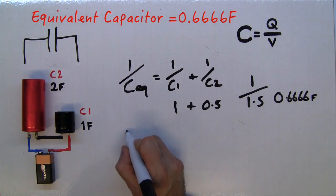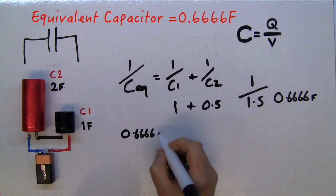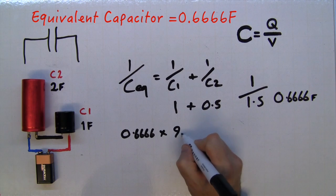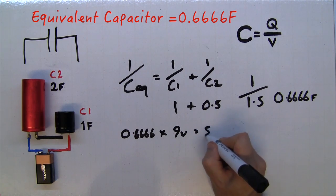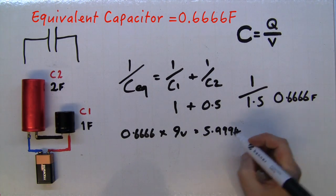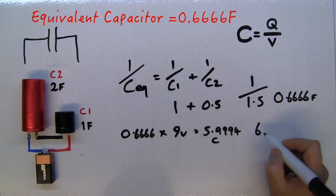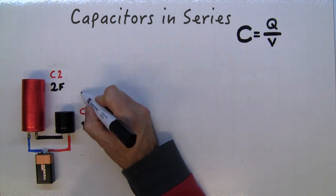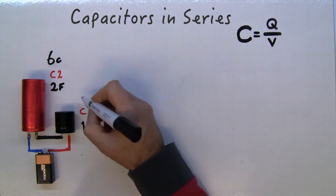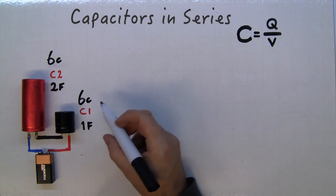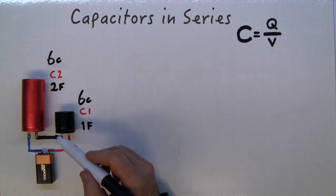Now your 0.6666 farads times nine volts is 5.9994 coulombs. Let's make that into six to make it easier. So six coulombs. Now we know we've got six coulombs there and six coulombs there, so we can do the rest of the calculation and find out the voltages across each of these capacitors.